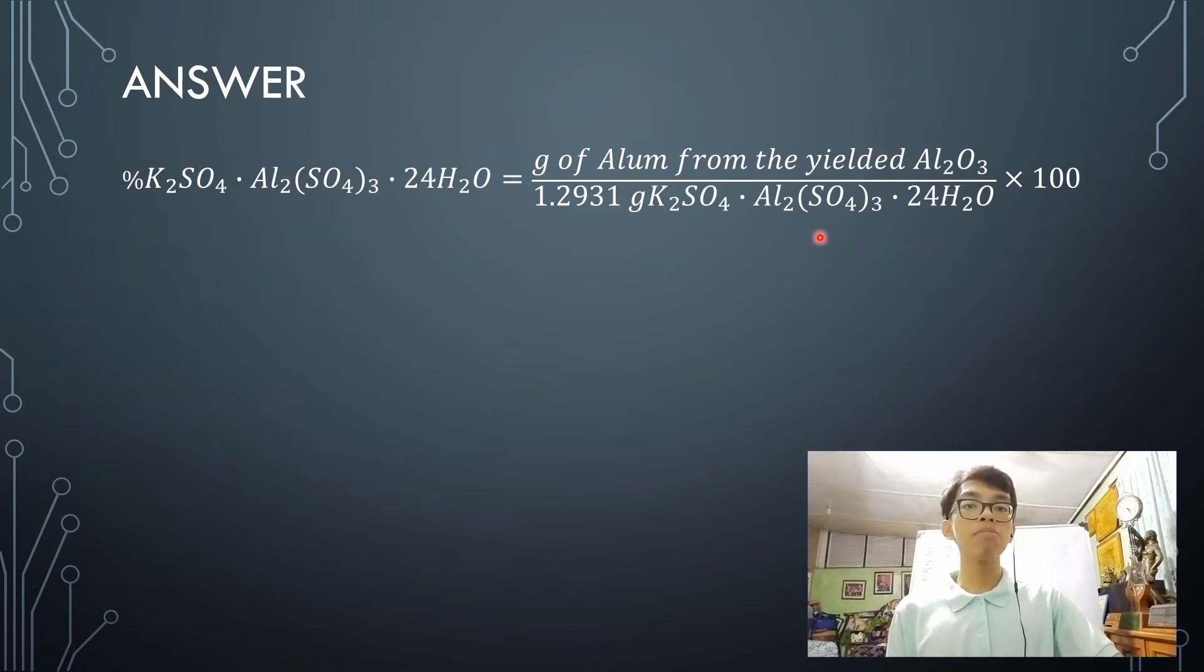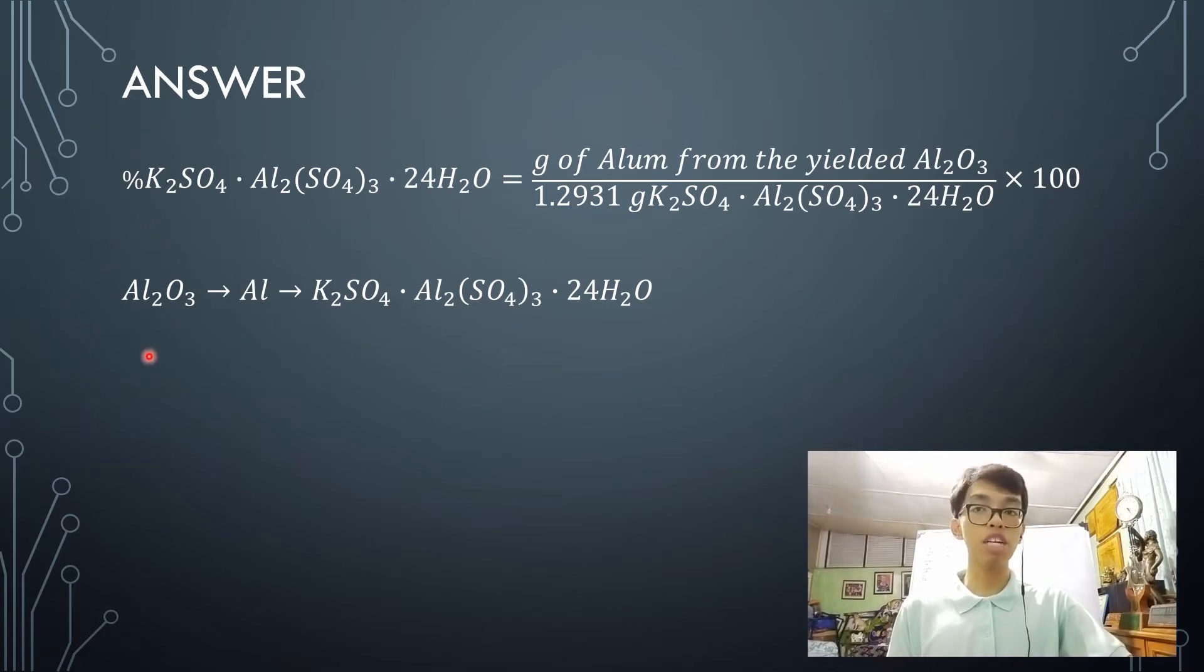Now, from aluminum oxide into alum, there seems to be no specific reaction that happens that can determine how aluminum oxide turned into alum. So what you want to do is find a component or an element that would tie them together. In this case, I found that it's aluminum. So what we're going to do is from the aluminum oxide, you're going to convert it into aluminum and then you're going to further convert that aluminum into the alum.